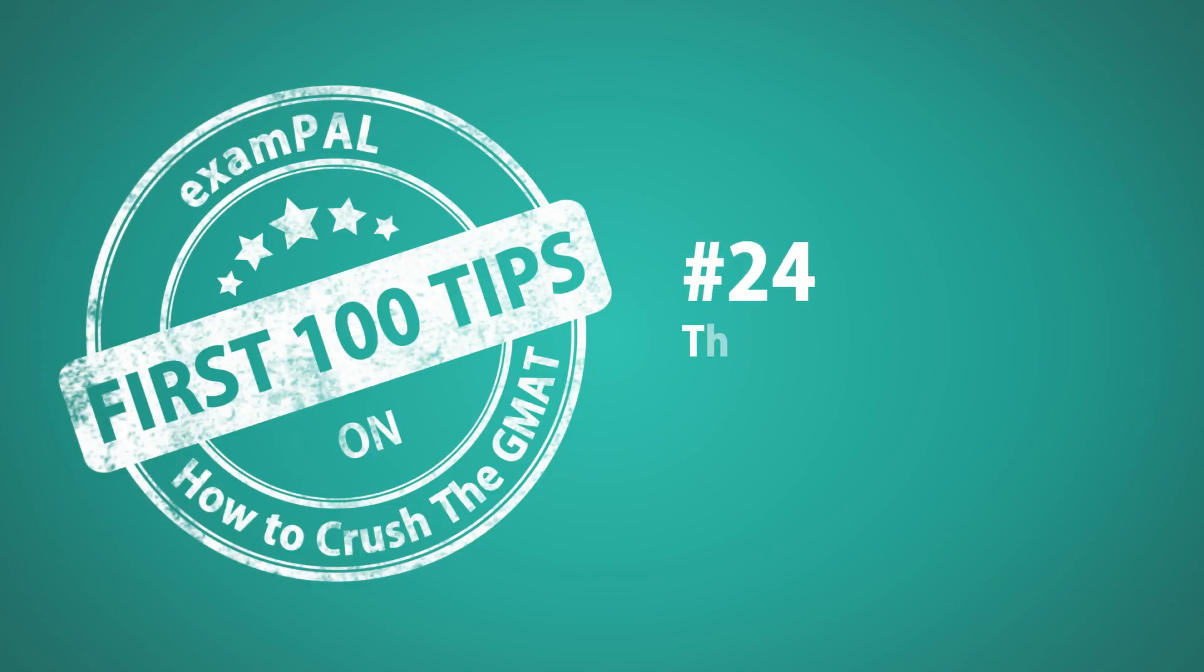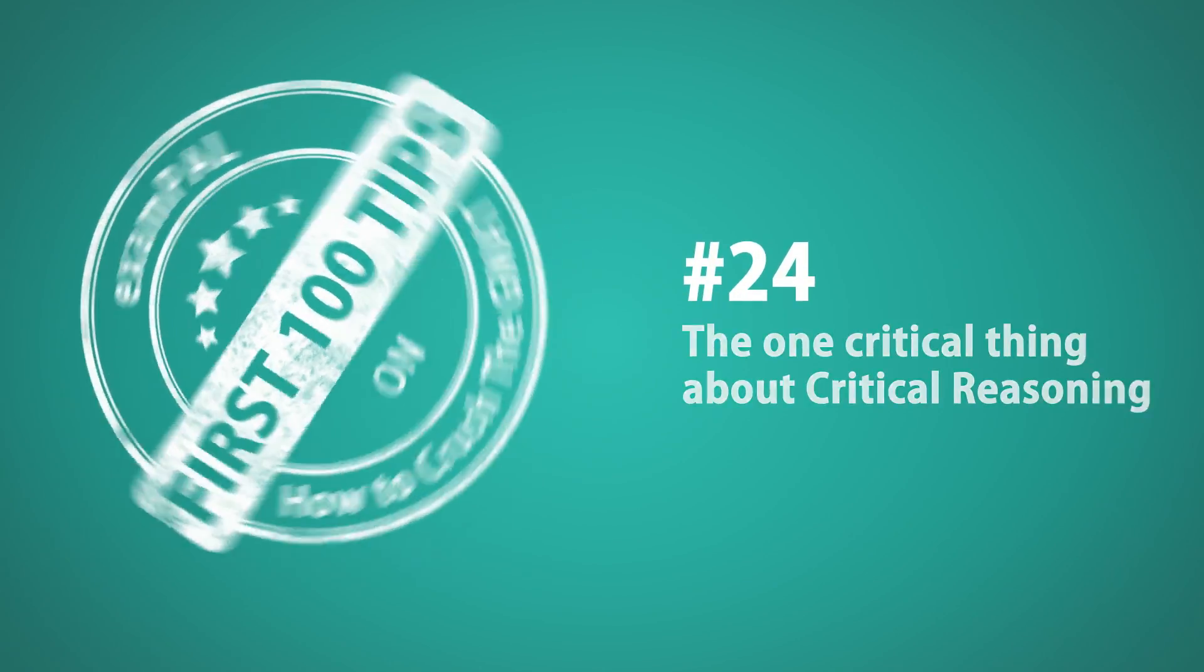Number 24. The one critical thing about critical reasoning. Don't be tempted by the answers. That's a trap. Most people read the question stem, a confusing blur of facts and assumptions, and then find comfort in the answers. I'm not sure what they're asking, but the answers will explain it to me.